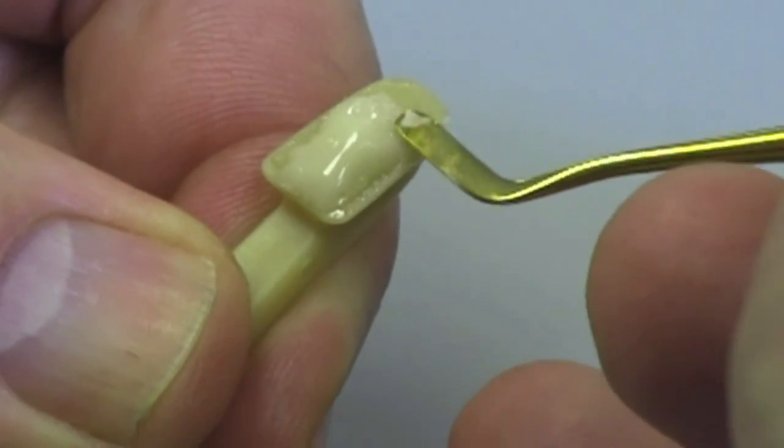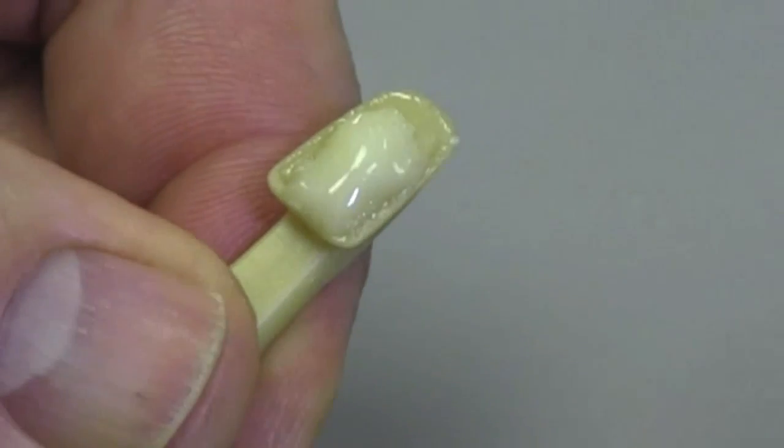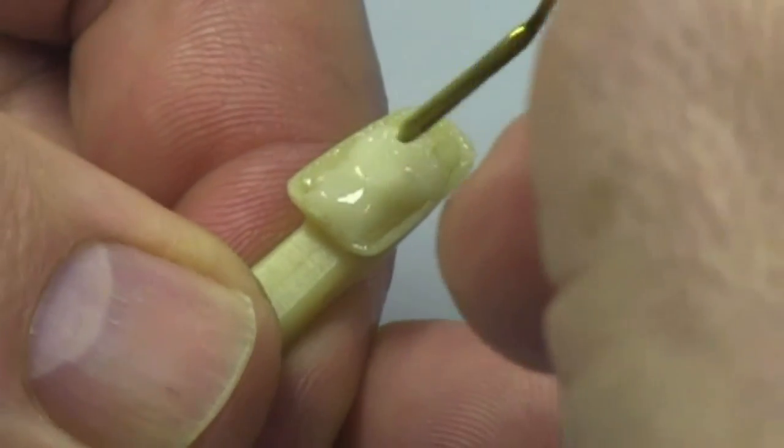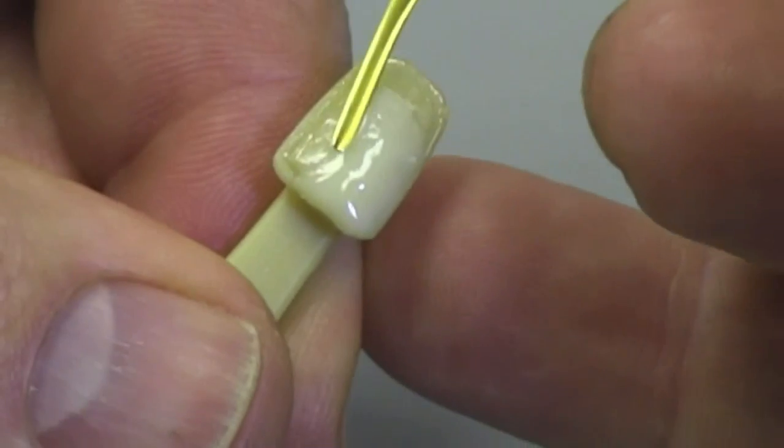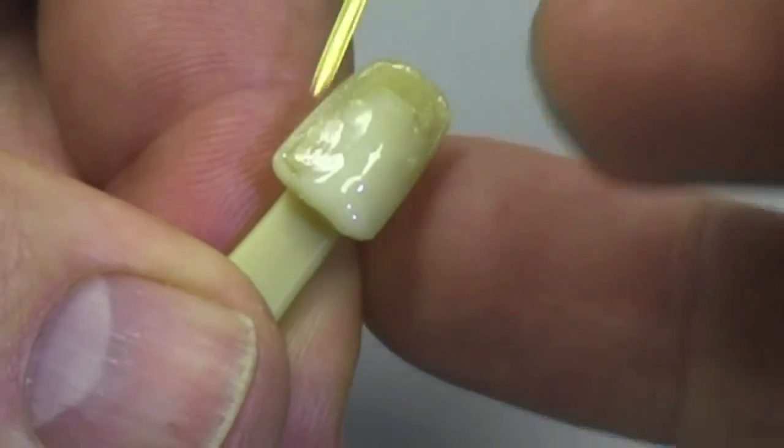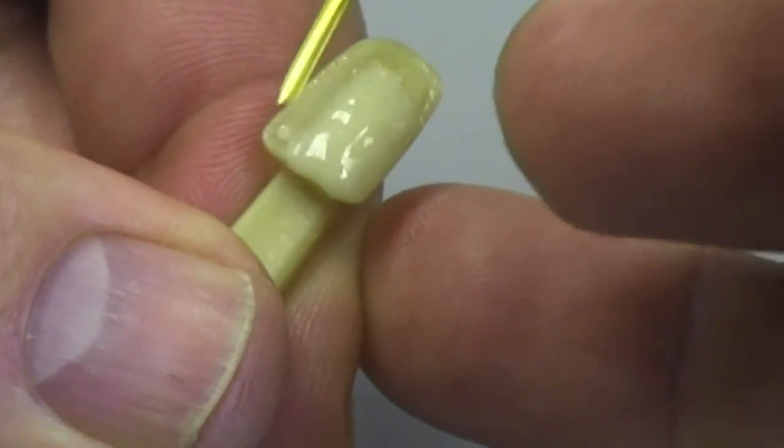Once I start to place that material in the proper area where I'm blending it in, then I can switch over to a finer instrument. This is my favorite instrument that I use predominantly, and it's the IPCL, or Interproximal Carver Long.